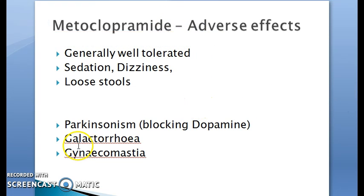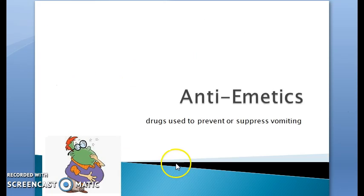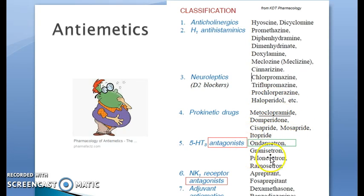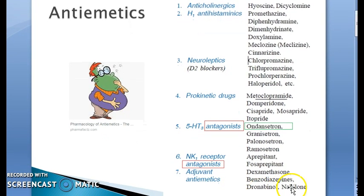Revision of anti-emetics classification: anticholinergics like hyoscine, H1 antihistaminics like promethazine, neuroleptics like chlorpromazine and haloperidol, prokinetics like metoclopramide, 5HT3 antagonists like ondansetron — note metoclopramide also has 5HT3 antagonism — NK1 receptor antagonists, and adjuvant anti-emetics like benzodiazepines.